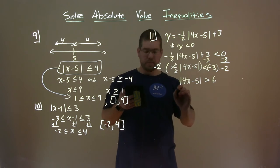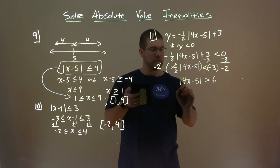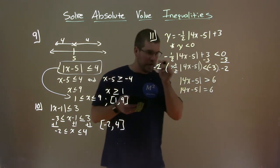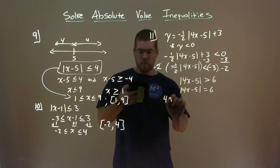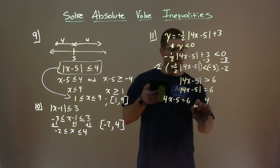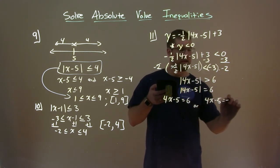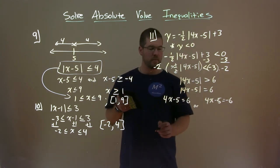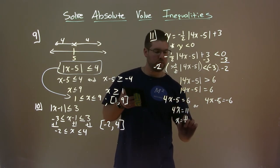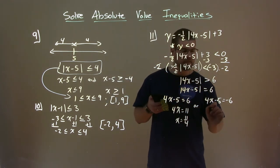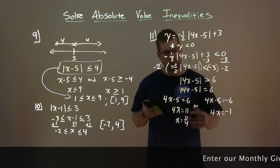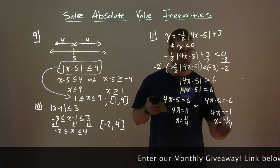Let's solve for when it equals 6. We have 4x minus 5 equals 6, and 4x minus 5 equals negative 6. Solving each: add 5 to both sides — 4x equals 11, divide by 4, x equals 11 fourths. On the right side: add 5, 4x equals negative 1, divide by 4, x equals negative one-fourth.